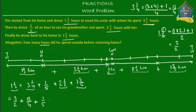So we have converted all these mixed numbers to improper fractions, and now all the numbers are in fraction format. Now adding them up is relatively easier, but we cannot add them as-is because we have different denominators — some are two, some are five, and there's a four. We must find a common denominator. To do that, we need to find the least common multiple of the denominators: two, four, and five.